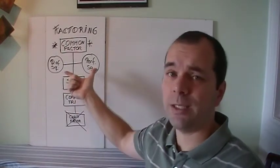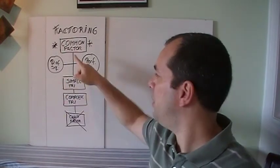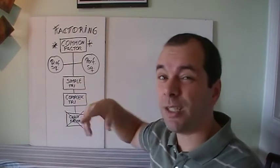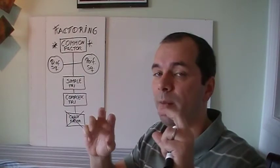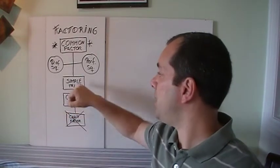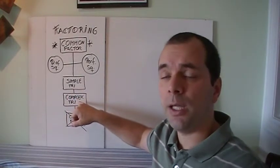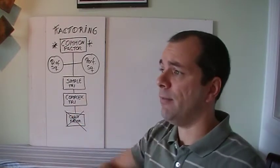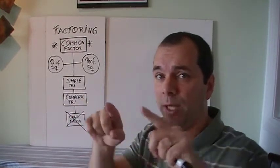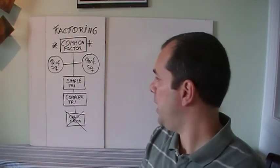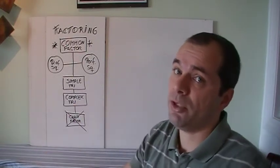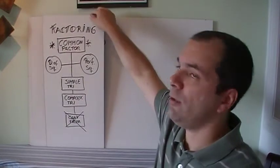And it takes longer to say these questions than to actually do it. Then we check for simple trinomial. If it starts with x squared, we need two numbers that multiply to the last number and add up to the middle number. If it doesn't start with x squared, then we have a complex trinomial which would be the box method, the organized trial and error. And if none of them work, maybe it just doesn't factor. So let's look at three examples.